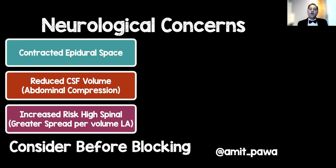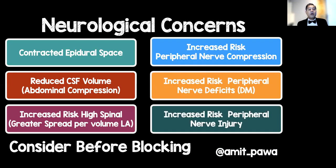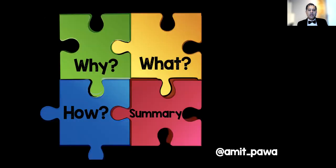When performing regional anaesthesia in patients with obesity, bear in mind the epidural space, CSF volume and the risk of a higher spinal. Think about patient positioning with regards to peripheral nerve compression. The coexistence of comorbidities such as diabetes mellitus means they are at increased risk of nerve damage and nerve injury. Consider these factors before performing a technique.